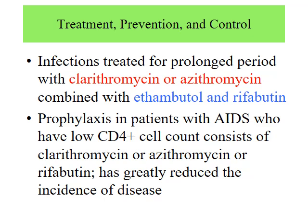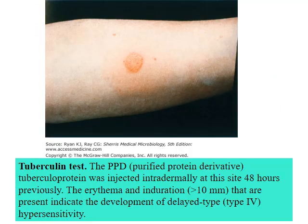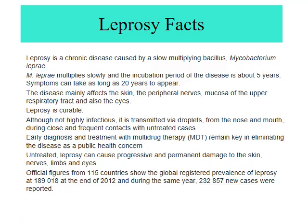Recapping the tuberculin test - since it's a mycobacterium, the test essentially tells you whether your body has seen any mycobacterium before, but it does not specify whether it's M. tuberculosis, M. avium, or M. leprae. The immune response is a type 4 delayed-type hypersensitivity reaction.